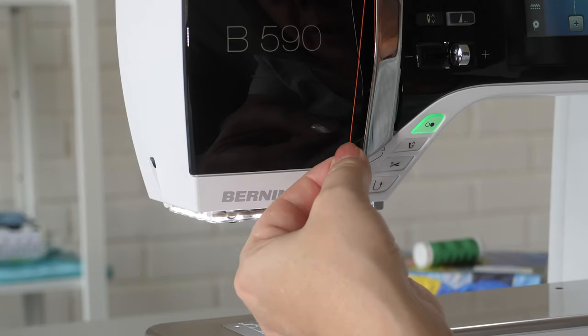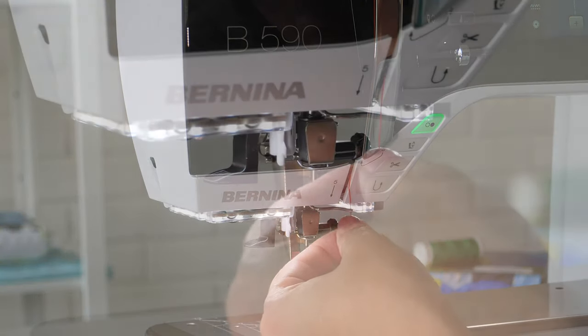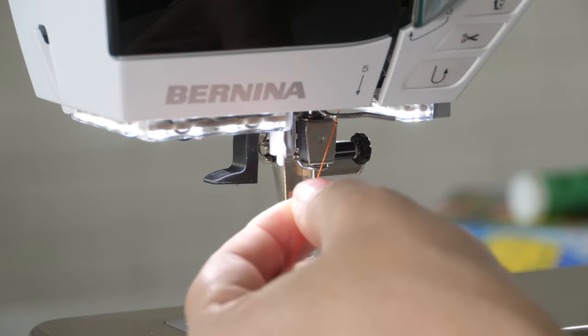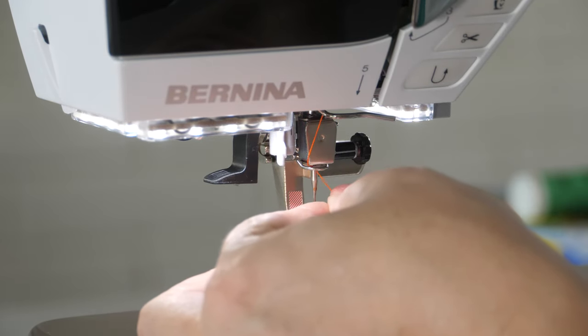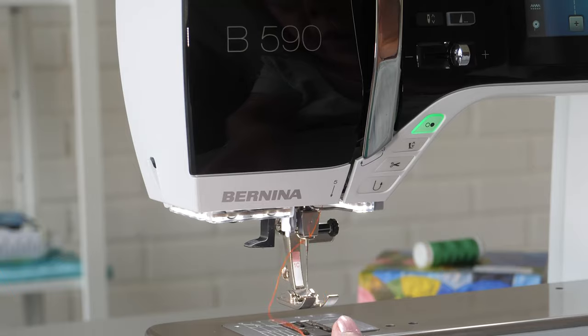Guide the thread through the guides at the bottom of the take-up lever cover and at the needle bar, then let go of the thread end.